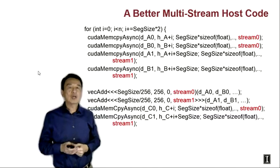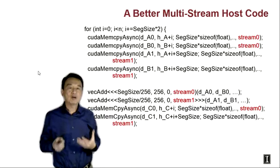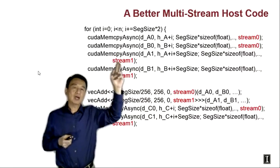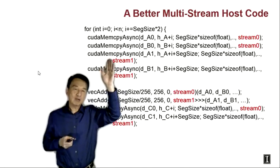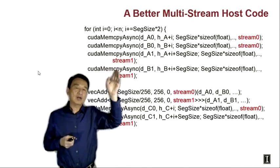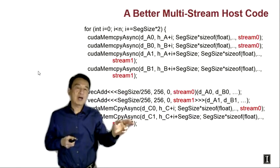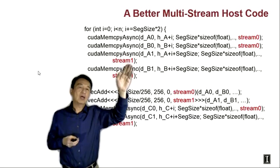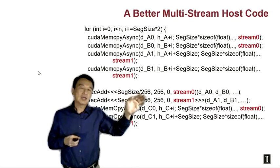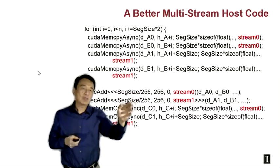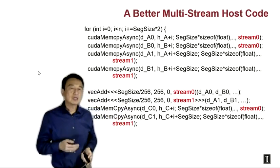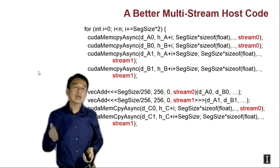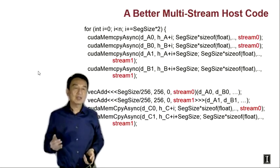Here we show a better multi-stream host code that achieves more of the overlap we're hoping for. Within the same loop iteration, we reorder the memory copy and kernel calls — interleaving the data copy from host to device, the kernel launch, and the data copy from device back between the two streams. We do host-to-device copy with stream zero, then immediately host-to-device copy with stream one, followed by the two kernel launches for both streams, then the copy back for both streams. This call ordering causes tasks to enter the copy engine queue in a different order, allowing more overlap.